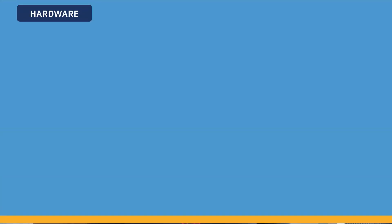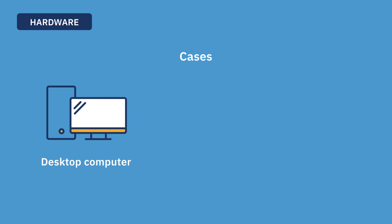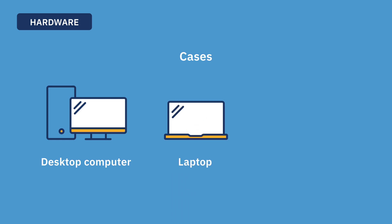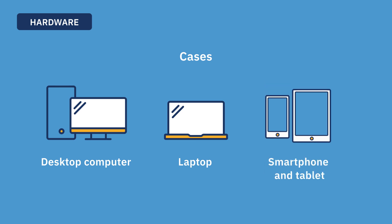The outside of the computer is called the case. Depending on the computer you're using, that can take many different shapes. For a desktop computer, the case is rather large and is typically called the tower. For a laptop, the case has an embedded keyboard and mouse in it. For a smartphone or tablet, the case is like the protective case you may use — the outside — and you interact with the computer through a touch screen.